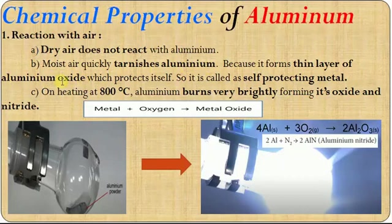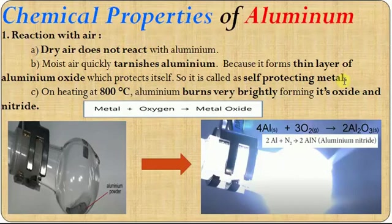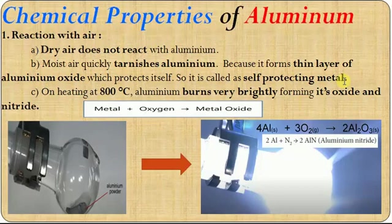The Aluminium oxide layer acts as a protective layer, so Aluminium is called a self-protecting metal. Once it is exposed to moist air or water vapor, it immediately reacts and forms an Aluminium oxide layer. This Aluminium oxide layer is a passive layer — it does not react with anything — and whatever is kept inside is protected. That is why Aluminium is called a self-protecting metal.